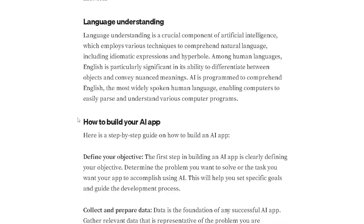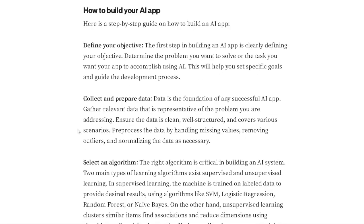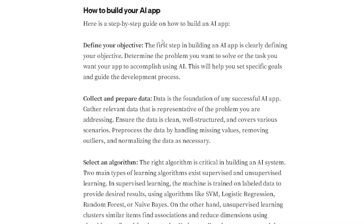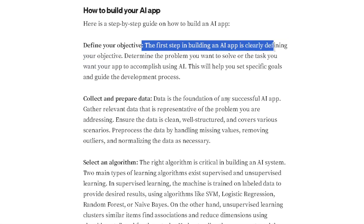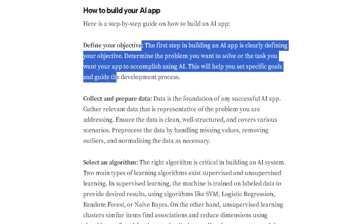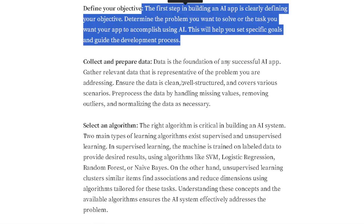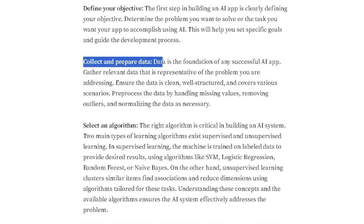How to build your AI app: define your objective, collect and prepare data, select the right algorithm, train the machine on labeled data. The first step in building an AI is clearly defining your objective — determine the problem you want to solve or the task you want your app to accomplish using AI. This will help you set specific goals.